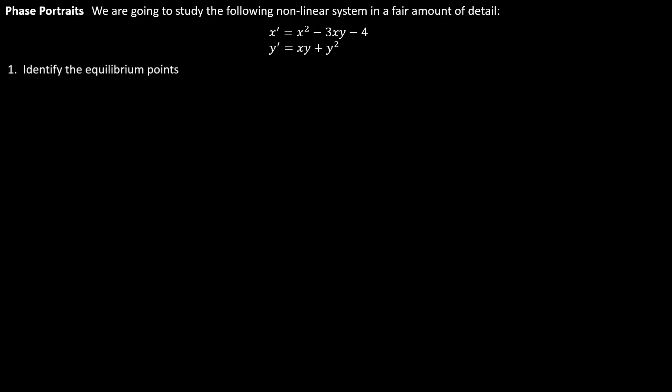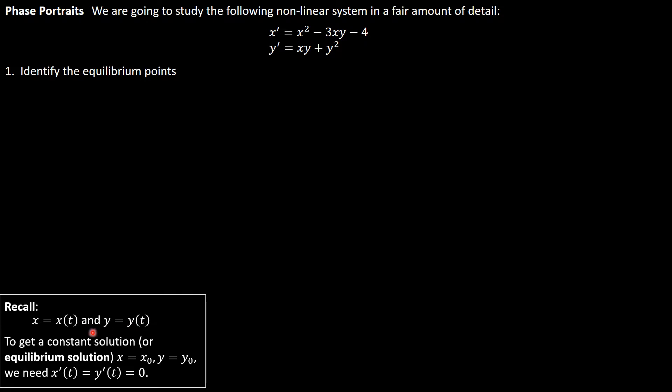Let's proceed with the first step: identifying the equilibrium points. First of all, let's recall that our function x is a function of time and y is also a function of time. What does it mean for a solution to be an equilibrium solution? Well, you might recall it means that x and y are both constants. So constant solution and equilibrium solution are synonymous, and if x is a constant and y is a constant then that would mean that their derivative with respect to time is zero. If x prime is zero and y prime is zero, then we know that the left hand side of these equations are zero and therefore the right hand side is zero, and that is how we find equilibrium points.